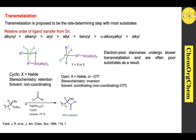Now take this example. This chiral organostannane undergoes palladium-catalyzed cross-coupling reaction with benzoyl chloride. Here you see 98% retention of configuration in the final product is observed, indicating that this reaction undergoes via cyclic transmetalation. This can be easily visualized by the choice of solvent — here you see a non-coordinating solvent is used.